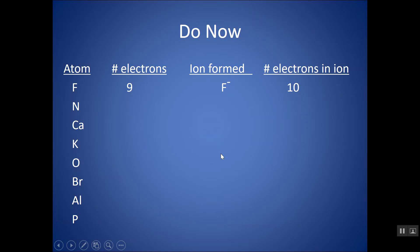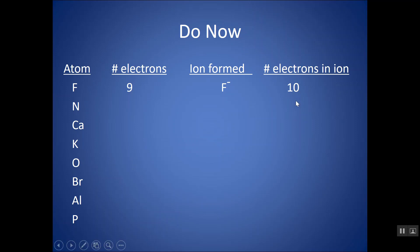For now, let's just look at the main groups. For each of these elements, tell me the number of electrons as an atom, predict what charge would form based on where it's located on the periodic table, and then tell me how many electrons are in that ion after gaining or losing electrons. You can also use the back of your periodic table to check your work. You'll notice that the number of electrons in the ion should match the nearest noble gas.